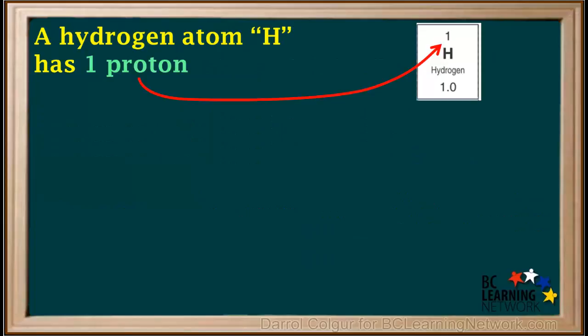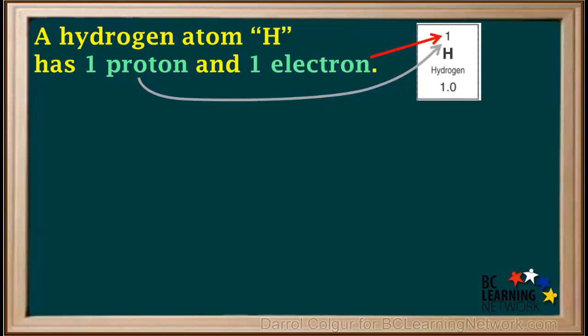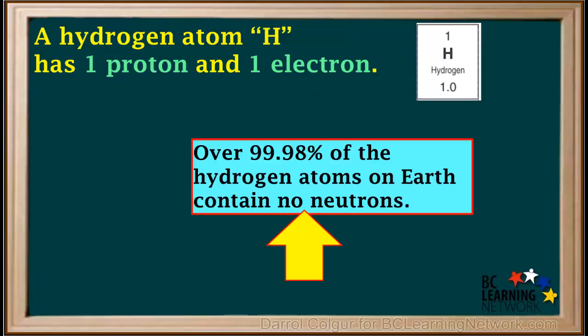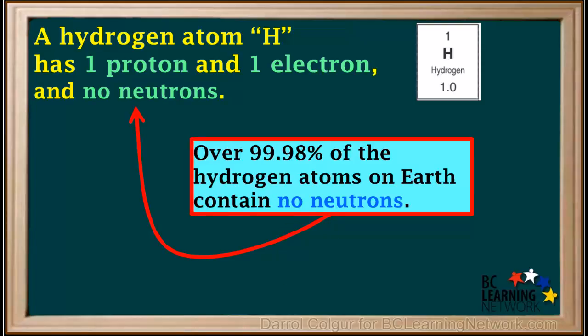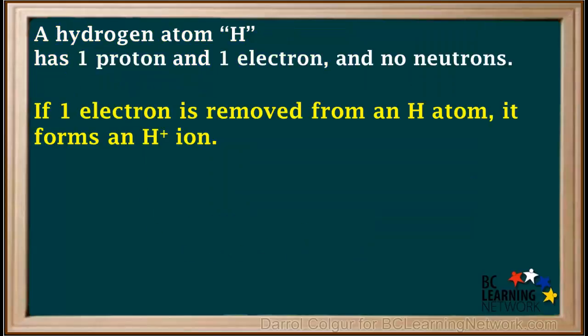Before we do that, just a quick word about a hydrogen atom. Its atomic number is one, so it has one proton. A neutral hydrogen atom also has one electron. Over 99.98% of hydrogen atoms on Earth contain no neutrons, so we'll state that a hydrogen atom has no neutrons. If one electron is removed from a hydrogen atom, it forms an H+ ion.